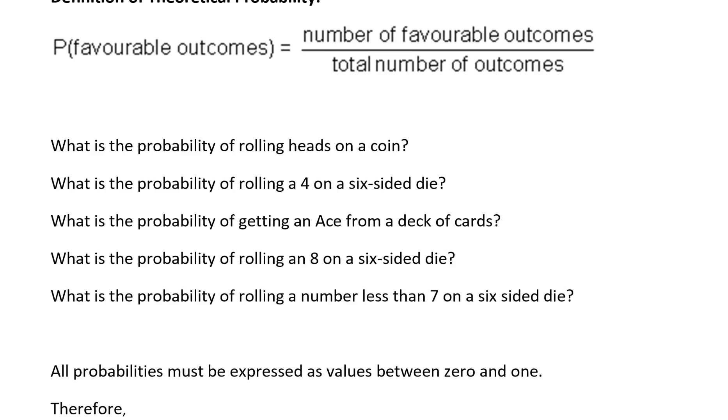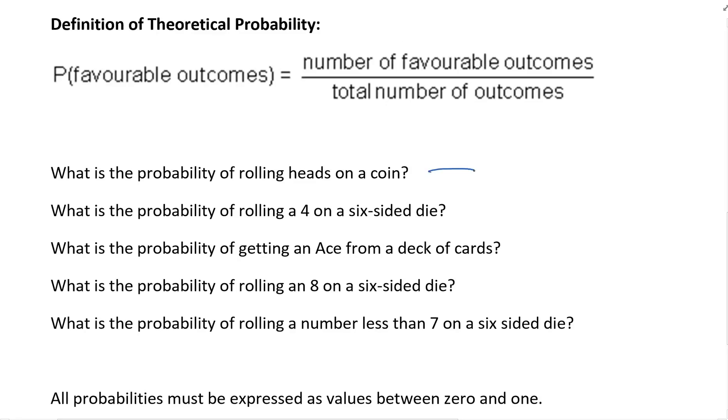What is the probability of rolling heads on a coin? So we know that a coin has two sides, it has heads and tails, so the total number of outcomes is two, but we're looking at the probability of rolling a heads and heads would be one of the two favorable outcomes.